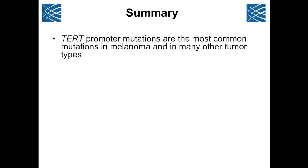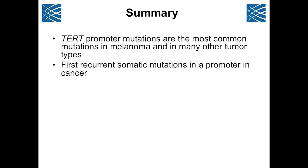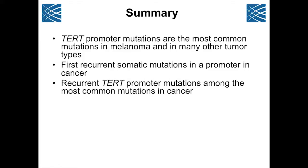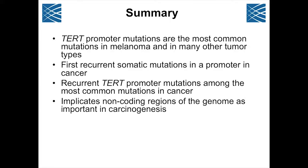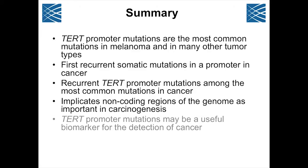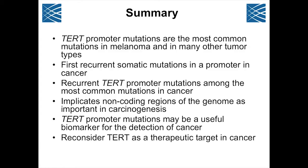In summary: TERT promoter mutations are the most common mutations in melanoma and many other cancer types. They are the first recurrent somatic mutations identified in a promoter in cancer, and among the most common mutations in all of cancer. This data implicates non-coding regions of the genome as important in carcinogenesis. Based on their specificity, TERT promoter mutations may be a useful biomarker for cancer detection, and I think we should reconsider TERT as a therapeutic target.